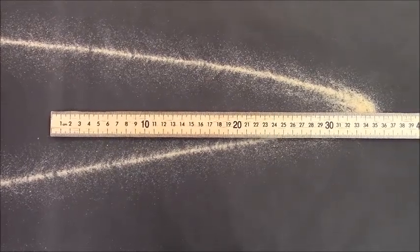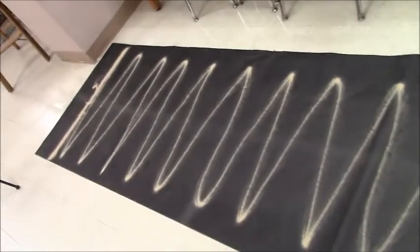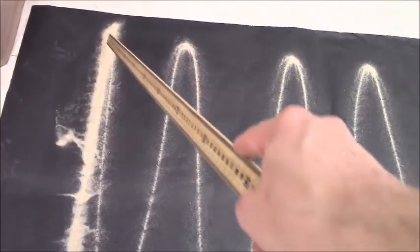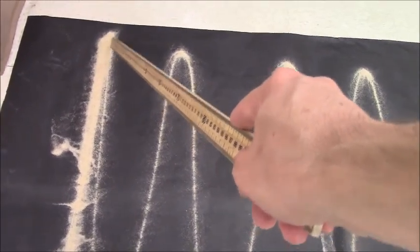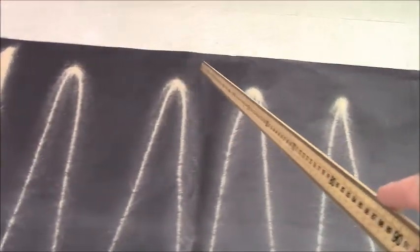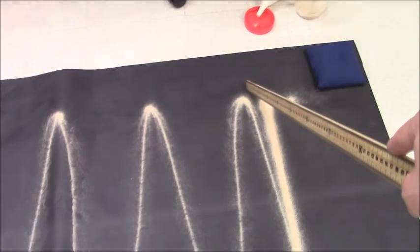And if we count how many waves we have here, if we consider that a crest there, then we went one, two, three, four, five, six, seven, eight, nine, ten. Just about ten, ten and a half, and consider down here about ten and a half waves.